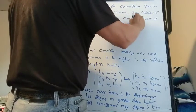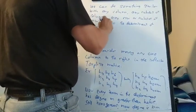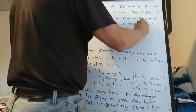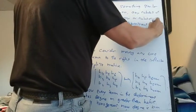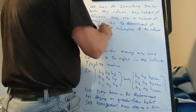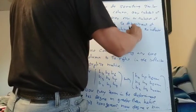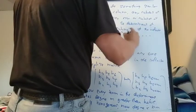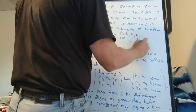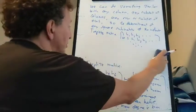So the determinant of any square submatrix of the infinite Toeplitz matrix 1, H1, H2, H3, ... is a homogeneous symmetric function.